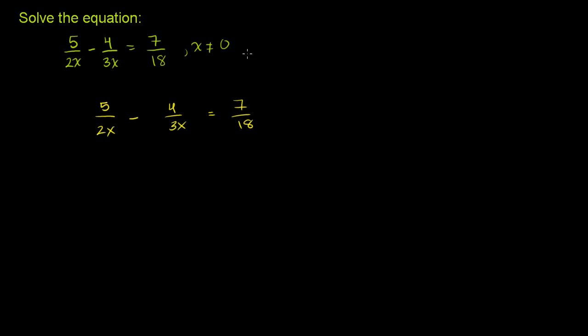And 18 also includes a 2 and a 3. The prime factorization of 18 is 2 times 9, which is 3 times 3. So when you're multiplying both sides of the equation by 18, you're actually multiplying it by a 2 and a 3 and another 3. So let's just multiply both sides of this equation by 18.